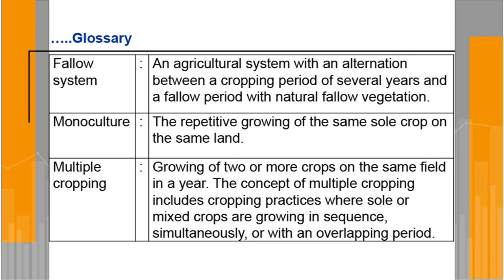Monoculture: the repetitive growing of the same crop on the same field year after year continuously for many years — that is monoculture. Multiple cropping: growing two or more crops on the same field in a year. The concept of multiple cropping includes cropping practices where crops are grown in sequence, simultaneously, or within overlapping periods.